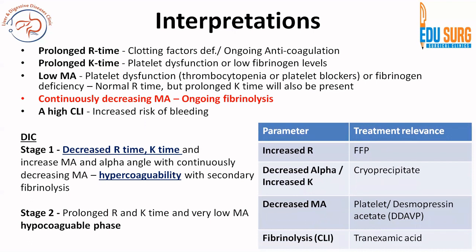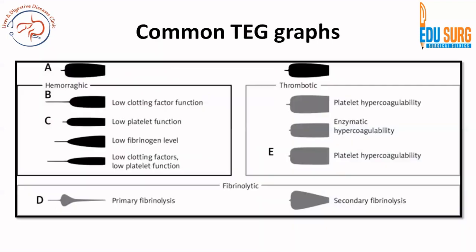How to put this into therapy: when you have an increased R time, you know there is an issue with clotting factors or ongoing anticoagulation — this is where you can use FFP. A decreased alpha angle or increased K time is a fibrinogen problem — you can use cryoprecipitate. A decreased maximum amplitude is a place where platelets or desmopressin may help. If there is increased fibrinolysis or high CLI indicating increased risk of bleeding, tranexamic acid may help. Remember you may need to serially repeat this test every one to two hours, especially in conditions like DIC.